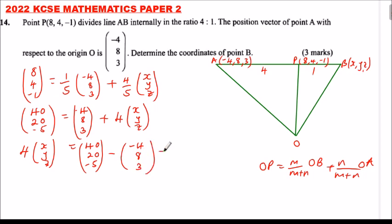Then we say it is minus this, changes to minus, so minus 4, 8, and 3. This will be 40 minus minus 4, that will be 40 plus 4, that will give us 44. 20 minus 8, that will give us 12. Minus 5 minus 3, that will give us minus 8.